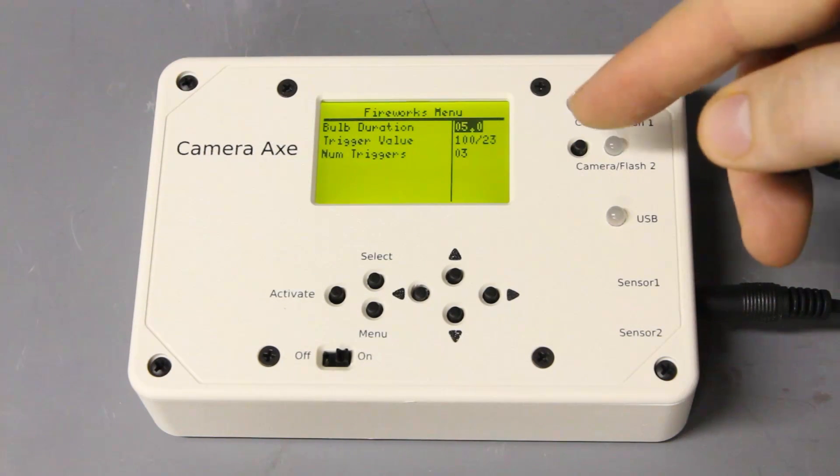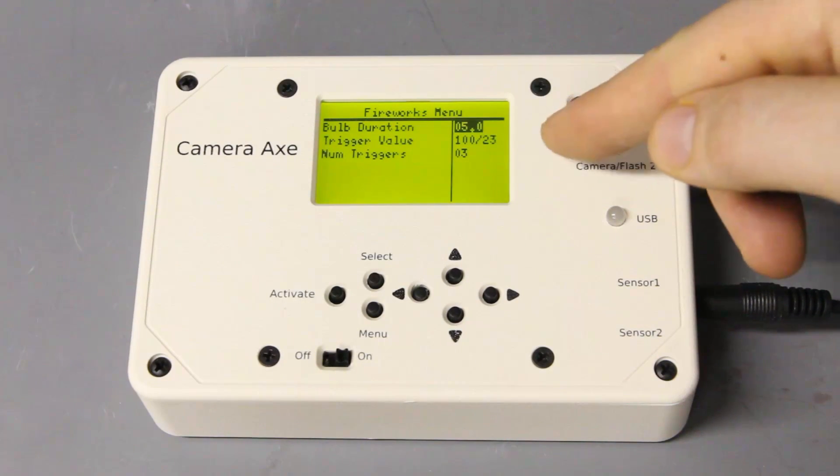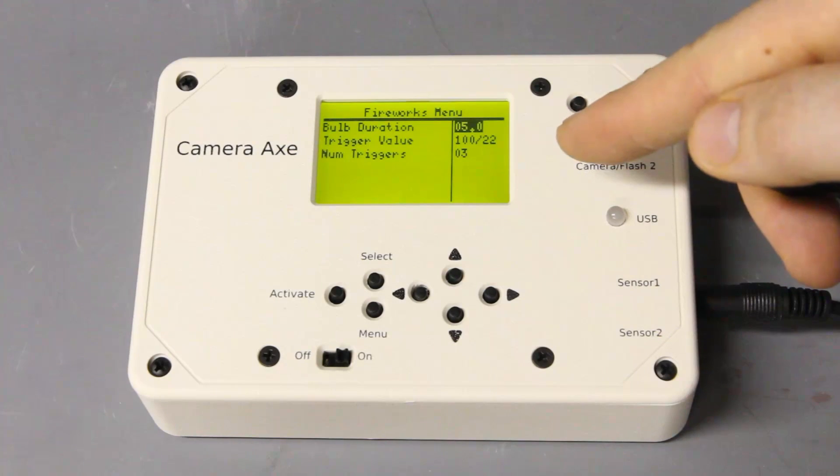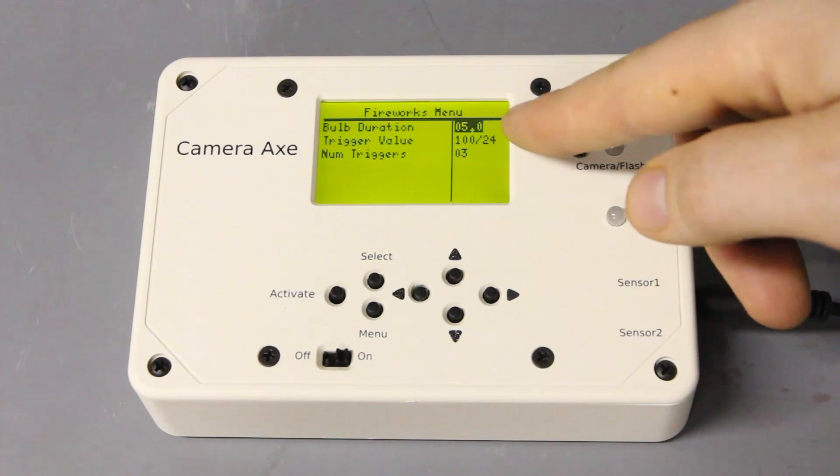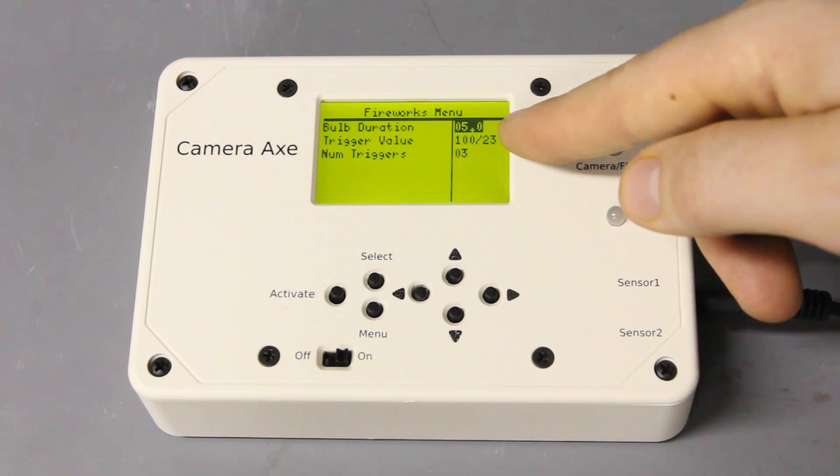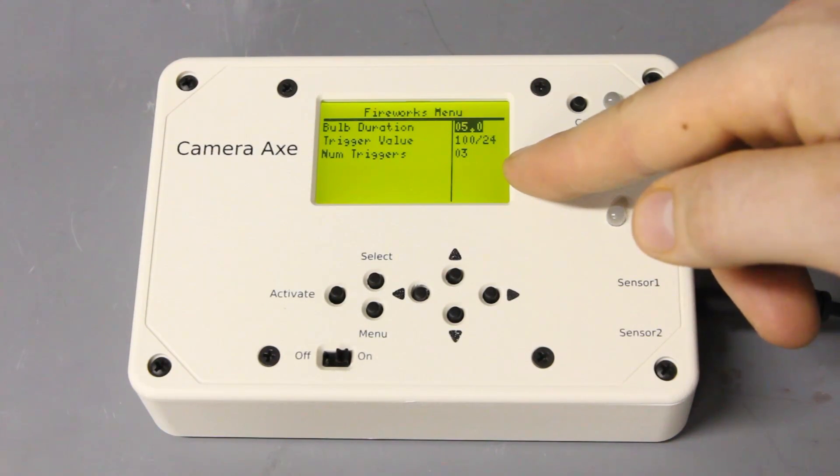And the idea is that you basically want to have a certain number of bursts of light from the fireworks and take shots of those. And you want to limit the absolute amount of time that the shutter is open. Right now, the default is to have the bulb duration set to 5 and the number of triggers, which is burst of light, set to 3.